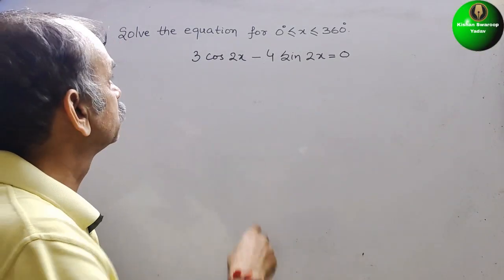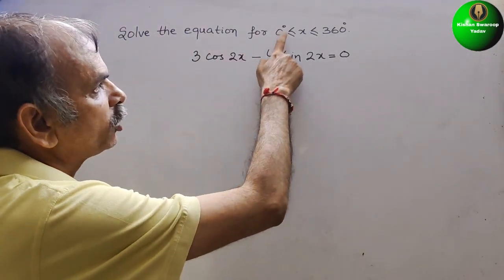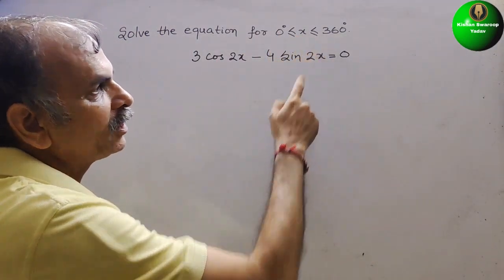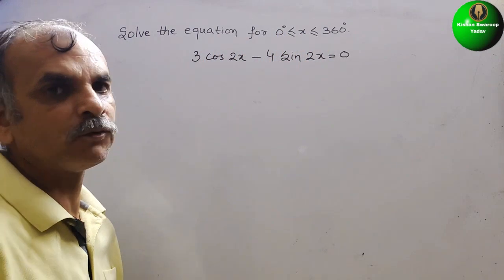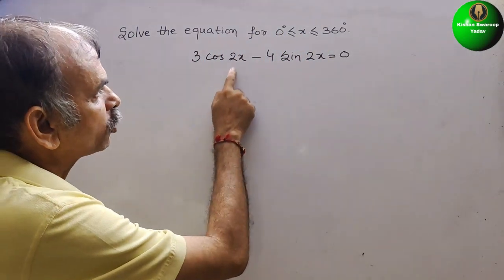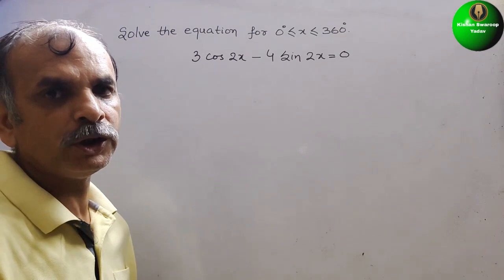Now, your question is, solve the equation for 0 degree less than or equal to x less than or equal to 360 degree. See what they have given: 3 cos 2x minus 4 sin 2x is equal to 0.